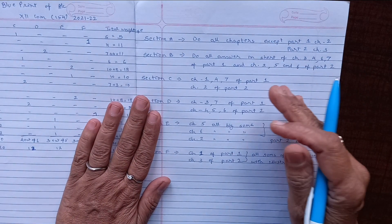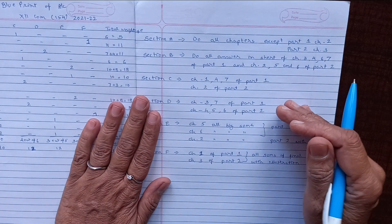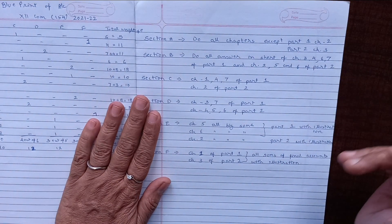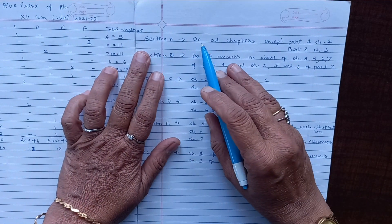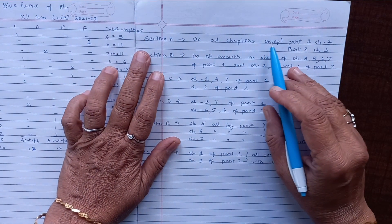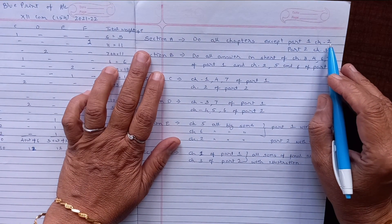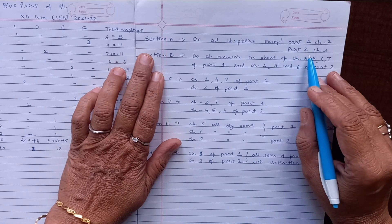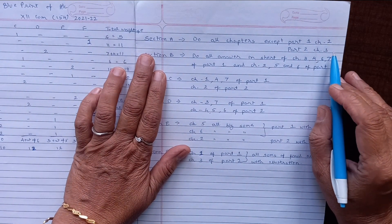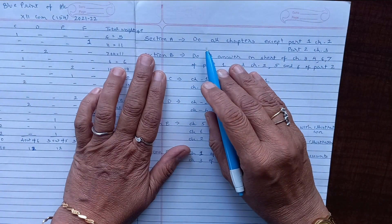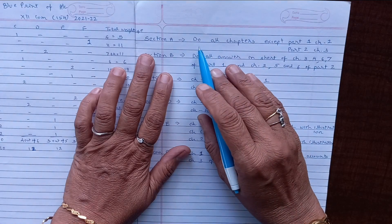By understanding the question paper pattern, it becomes easy for you to prepare for your exam. For Section A, you need to do all the chapters except chapter 2, that is final accounts, and chapter 3 of part 2, that is company's final accounts. The MCQs are not going to be asked from these two chapters.